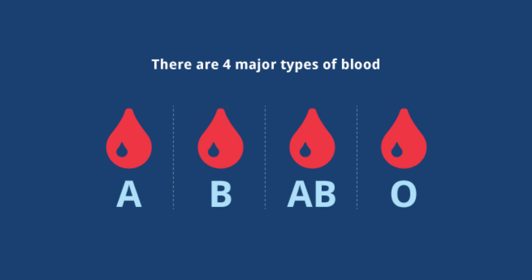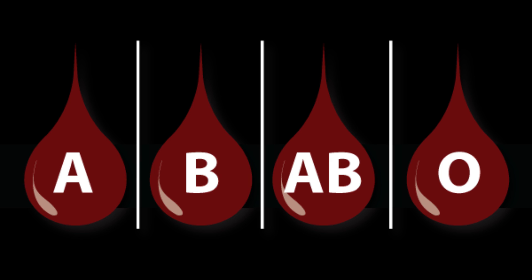Blood type and offspring. About 85% of people are Rh positive. Yet if the woman is Rh negative and the man she conceives with is Rh positive, there is an increased risk that their child will develop some health issues.